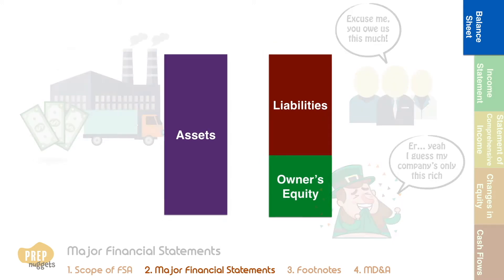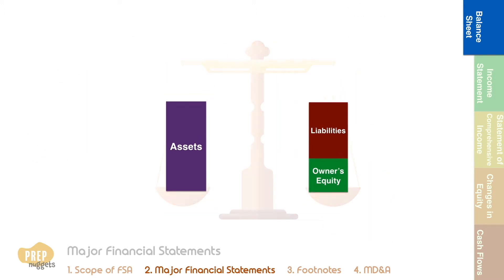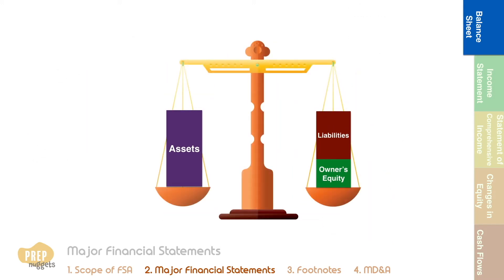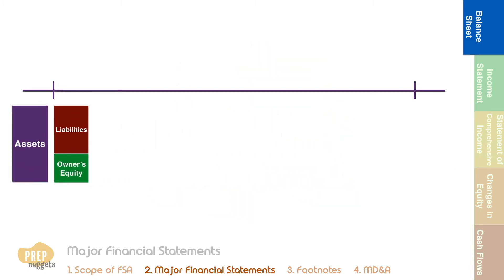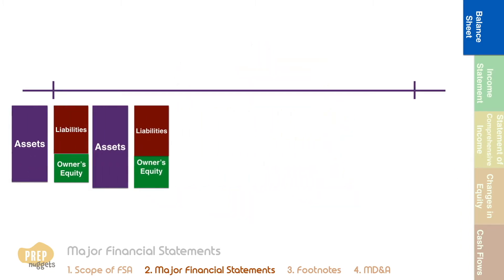It's called the balance sheet because the amount of assets must always equal the sum of liabilities and owner's equity. As mentioned, balance sheets are snapshots of a firm's financial situation.